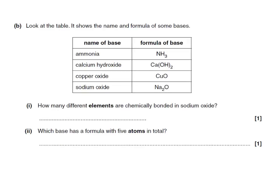Here's a past paper question. Look at the table. It shows the name and formula of some bases. How many different elements are chemically bonded in sodium oxide? Well we look for sodium oxide, which is here. We can see that there are two elements listed, Na and O. So the answer here is 2.